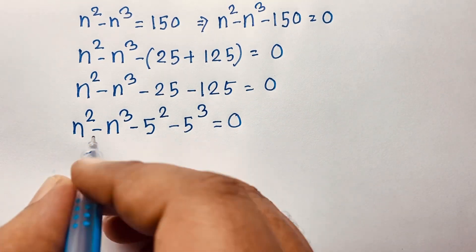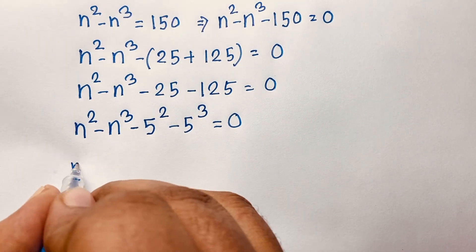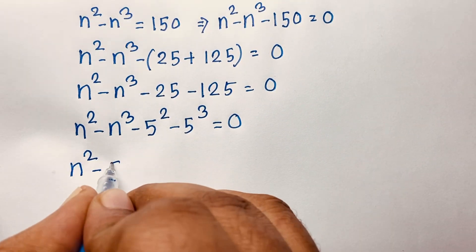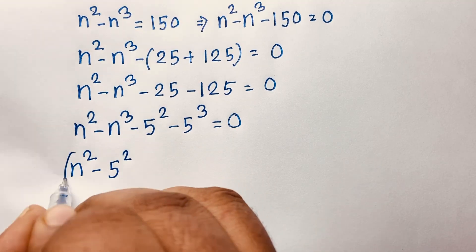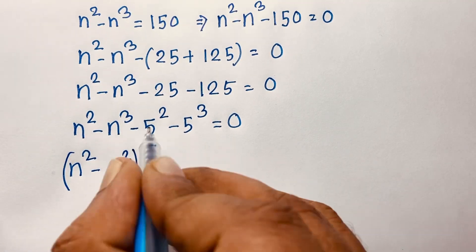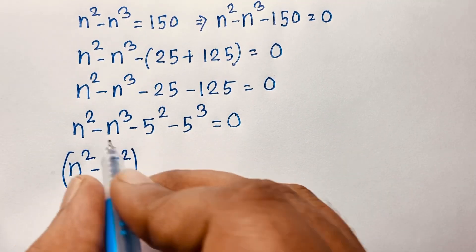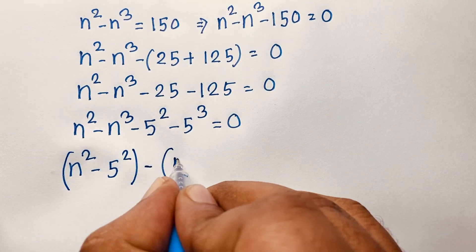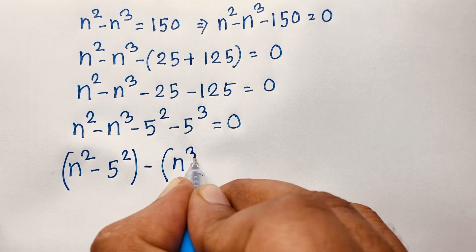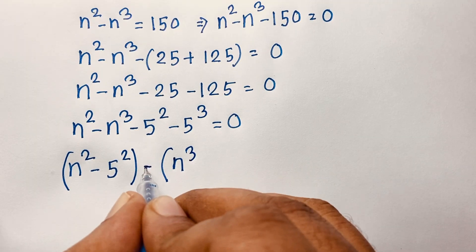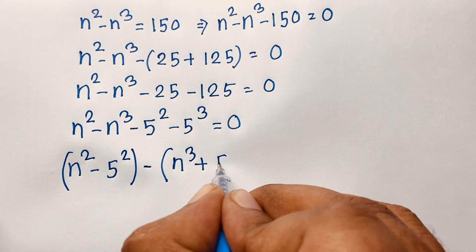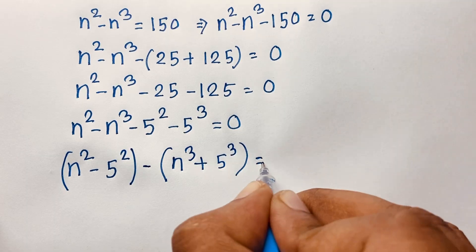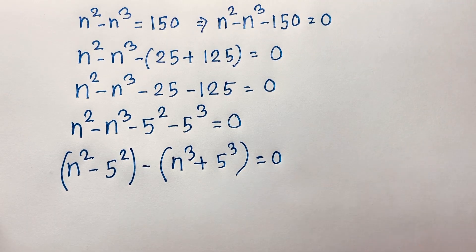Now I can see here we have n squared minus 5 to the power 2, and for the cubic terms, taking negative as common, we get positive 5 to the power 3 is equal to 0.